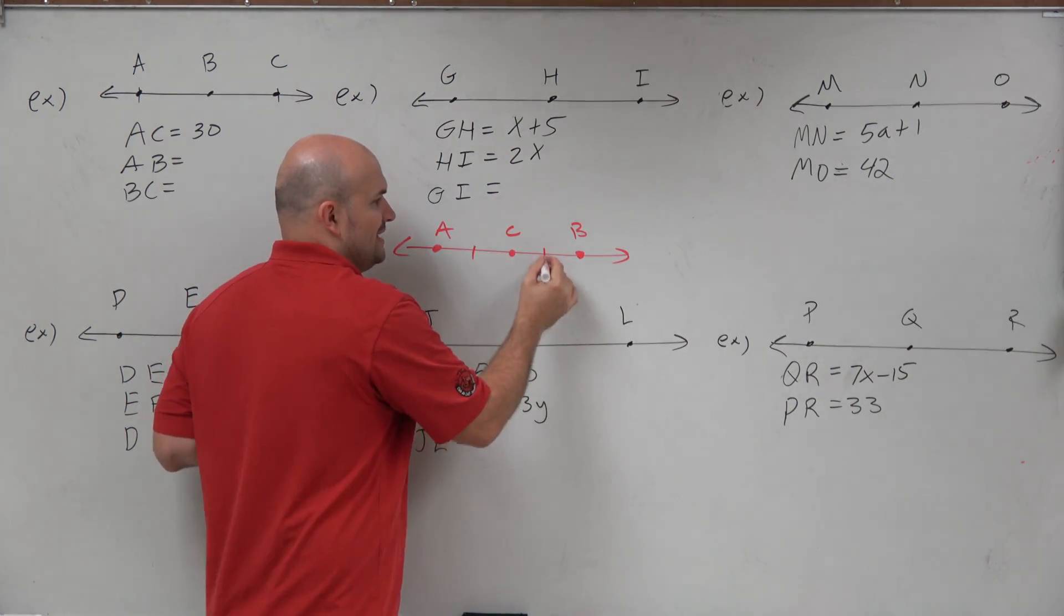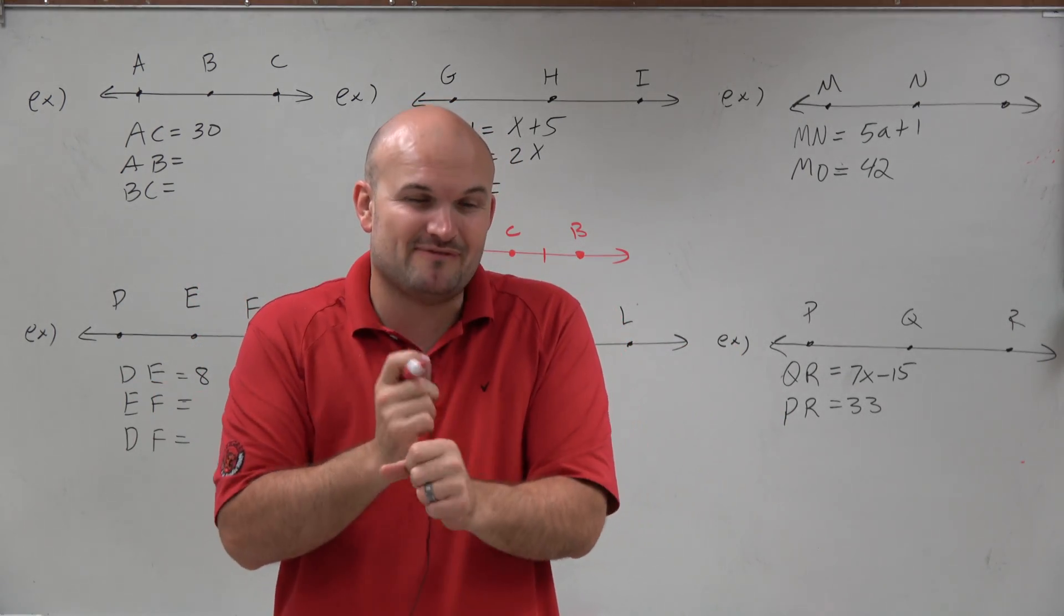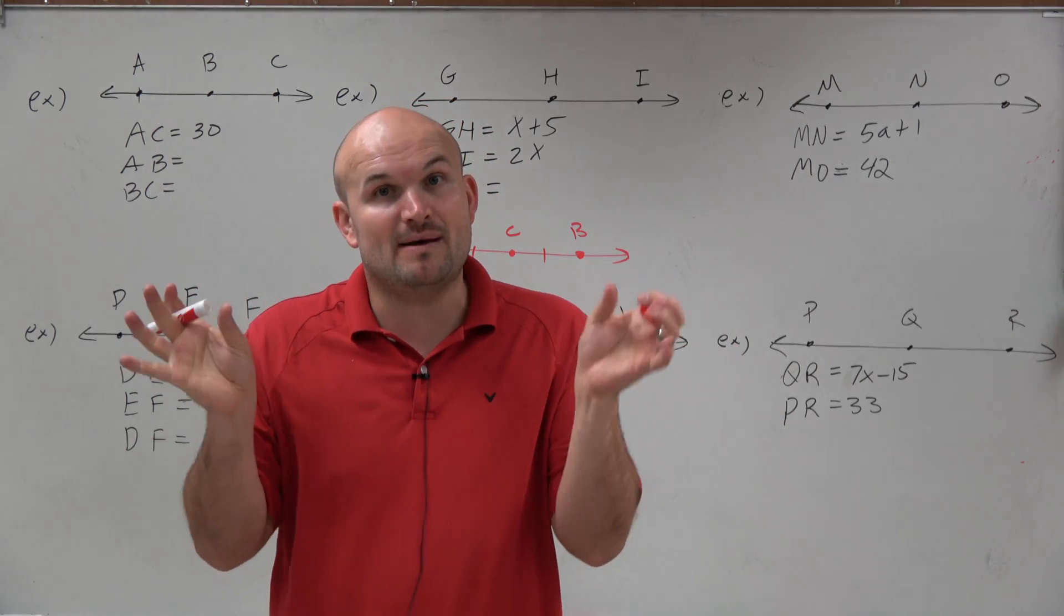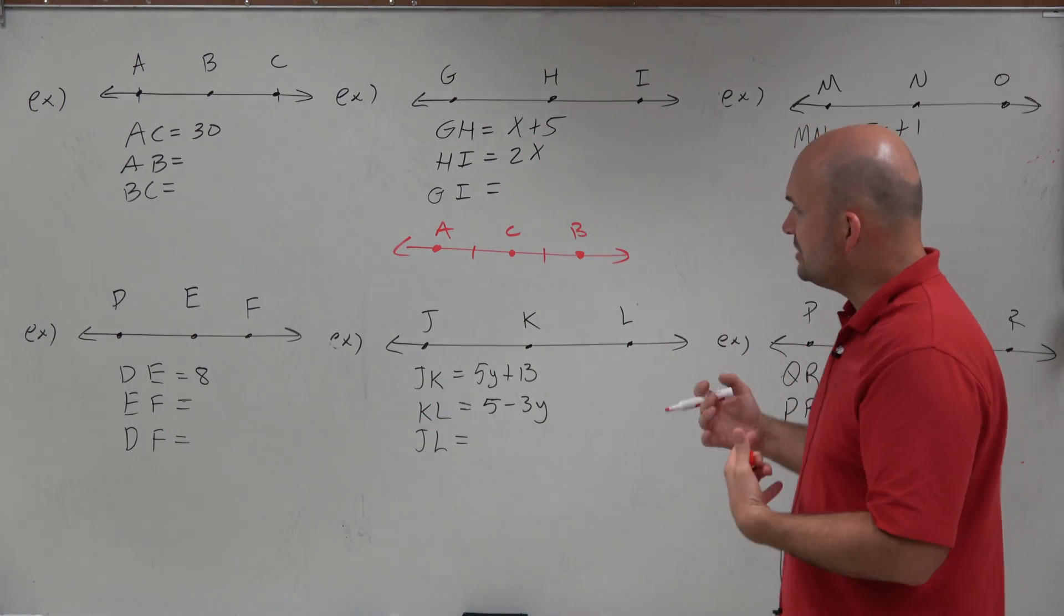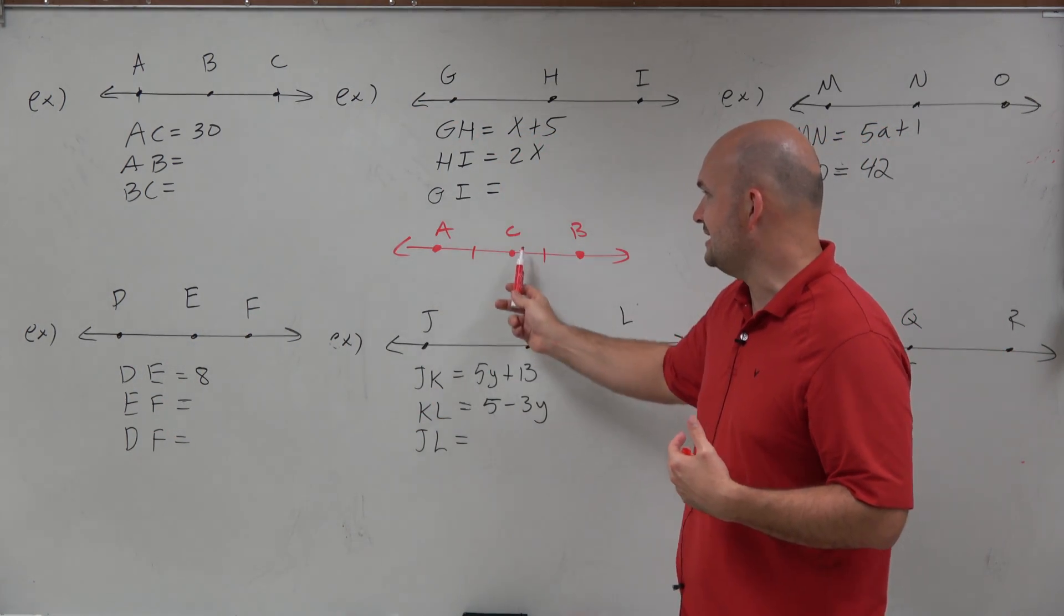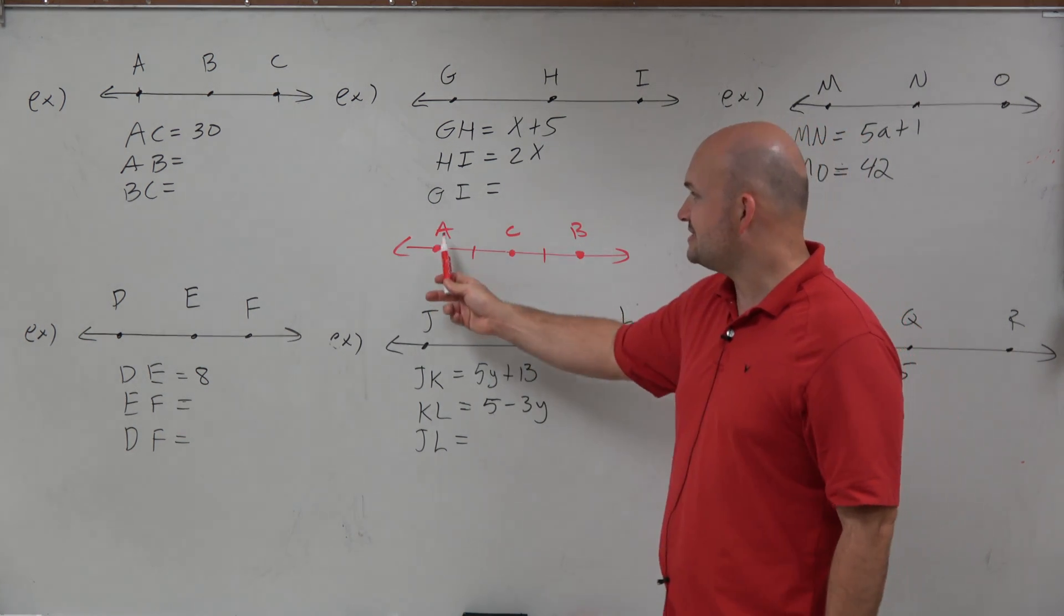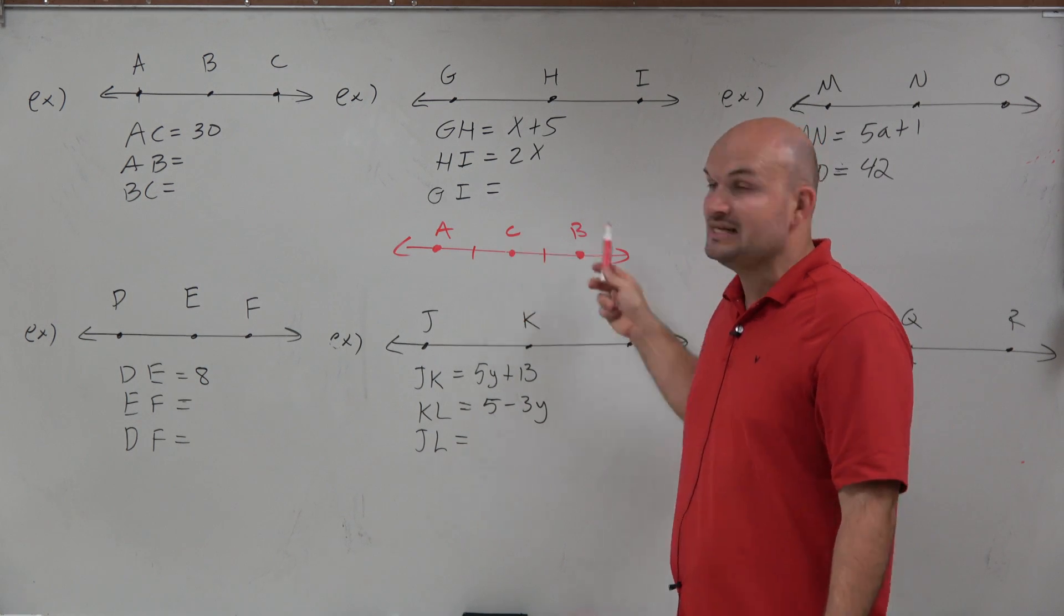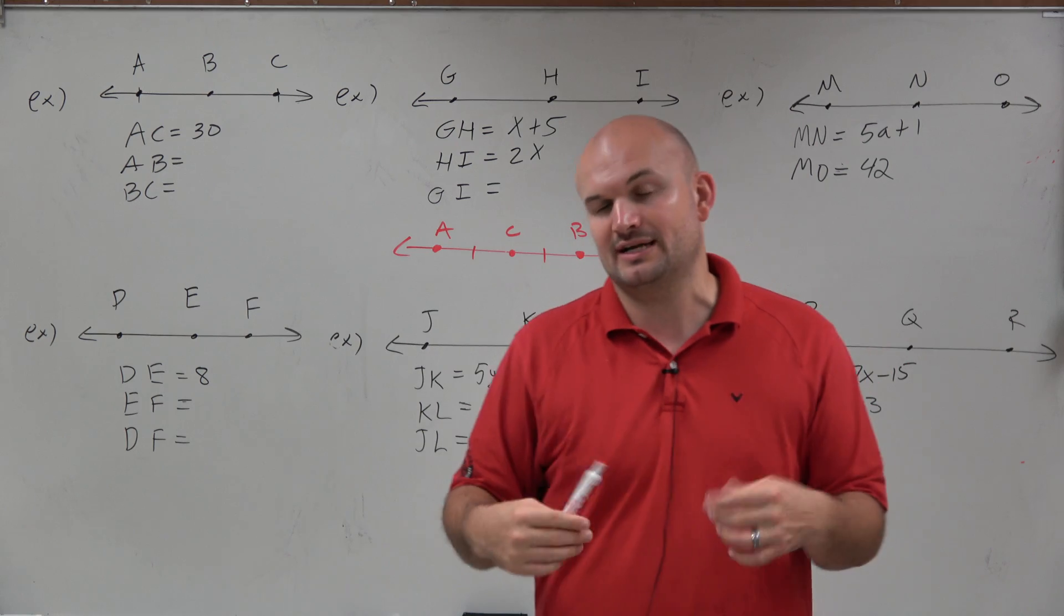So therefore, AC is going to be equal to the distance of CB. Those distances are equal. So whenever we find a midpoint, we know that both sides are equal, and that's very important. We also know that the distance from AC plus the distance from CB is equal to the distance from A to B. And the distance of AC or the distance from C to B is half the distance from A to B.